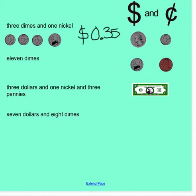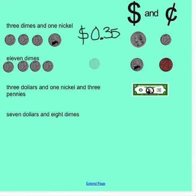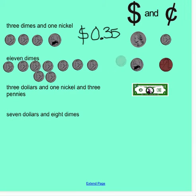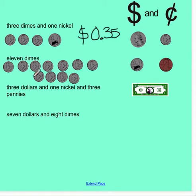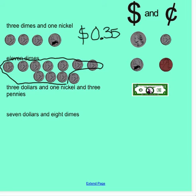Next example: eleven dimes. I'm going to pull them over — one, two, three, four, five, six, seven, eight, nine, ten, and eleven. Because these are all dimes I can count by tens: 10, 20, 30, 40, 50, 60, 70, 80, 90, one hundred. When I get to one hundred I know that one hundred cents is equal to one dollar, so ten dimes equal one dollar. And I also have ten cents left over. I'm going to put my dollar sign first, then write a one for the one dollar, put in my decimal point — I have one dime and zero cents left over. This represents one dollar and ten cents.